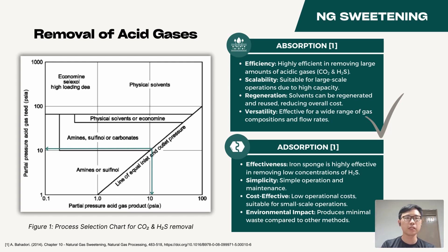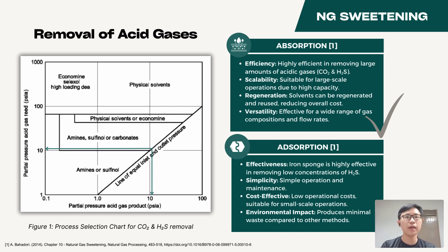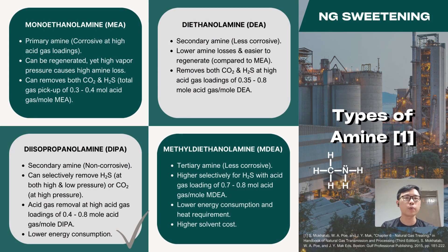the amine solvent absorption is more preferred, as depicted in the process selection chart shown. This is due to the large amount of CO2 and H2S present in the feed to be removed, and its scalability for large-scale operations. Amines are well suited for applications where the acid gas partial pressure is low and low acid gas contents are required on the treated gas.